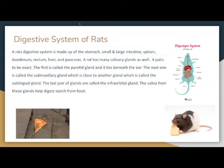The digestive system of rats is made up of the stomach, the small and large intestine, the spleen, the duodenum, the rectum, liver, and pancreas. A rat has many salivary glands — up to four pairs. The first pair is the parotid gland, which lies beneath the ear. The next pair is the submaxillary gland, close to another gland called the sublingual gland. The last is the infraorbital gland. The saliva from these glands helps to digest starch from food.